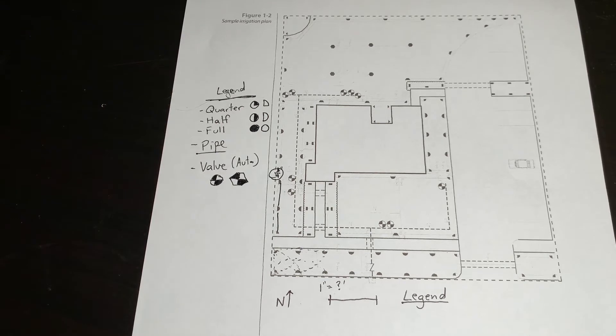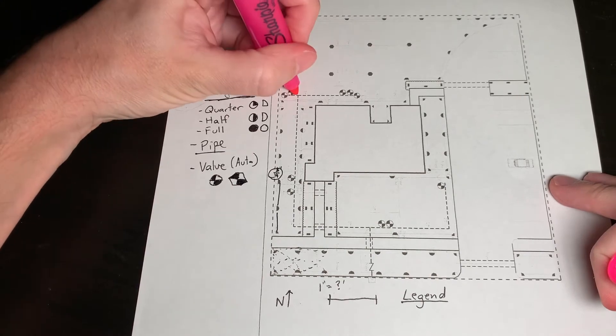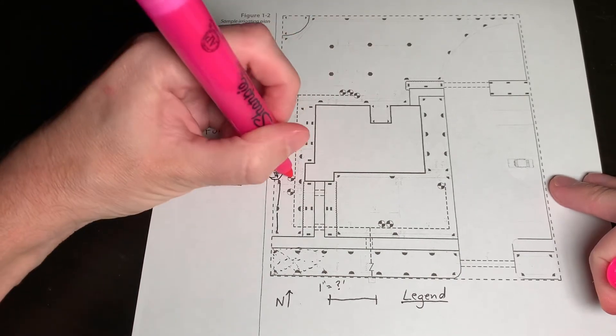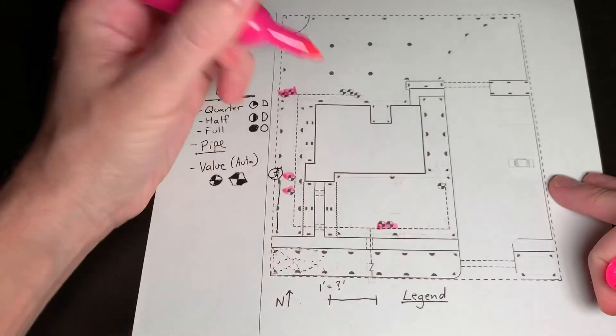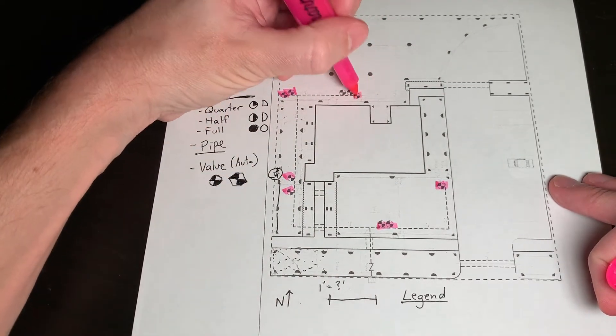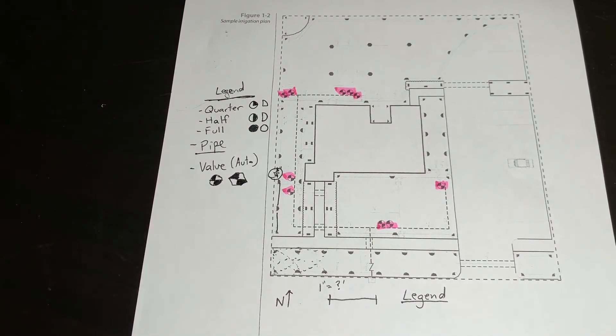And very quickly, we could do a count. We could say we've got one, two, three, four, five, six, seven, eight, nine, ten valves. You can see very easily. You can find the valves and you can count them.